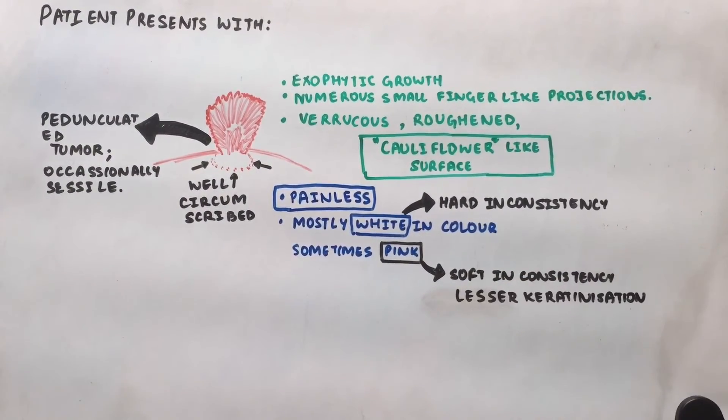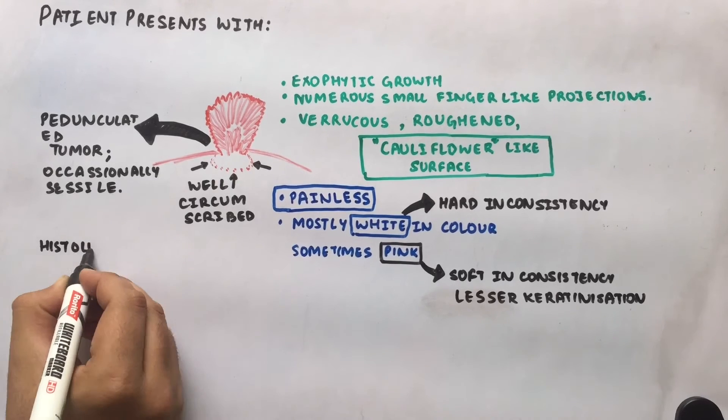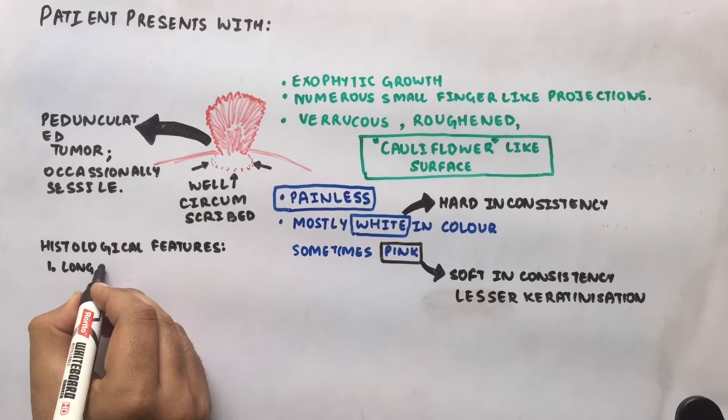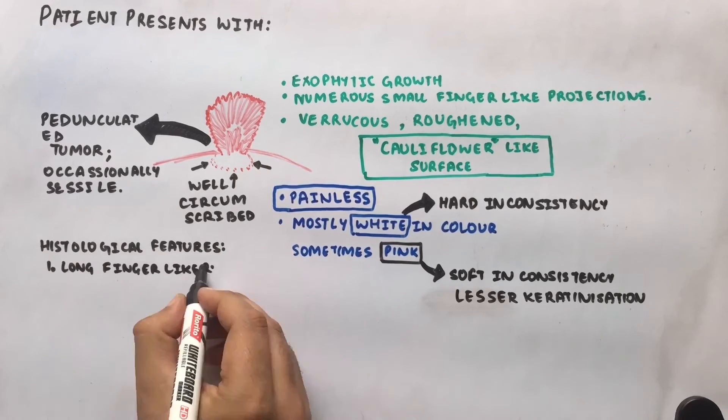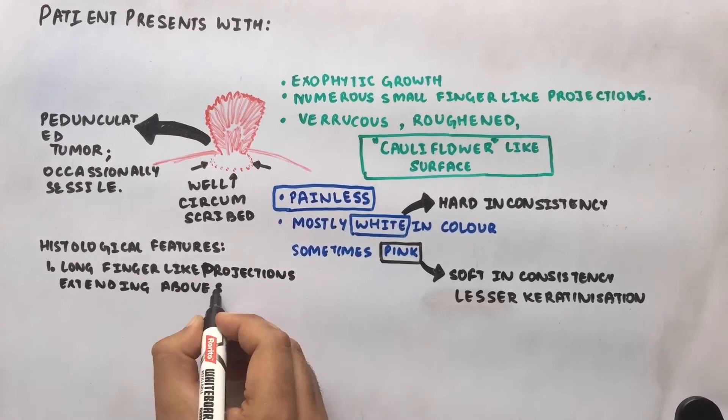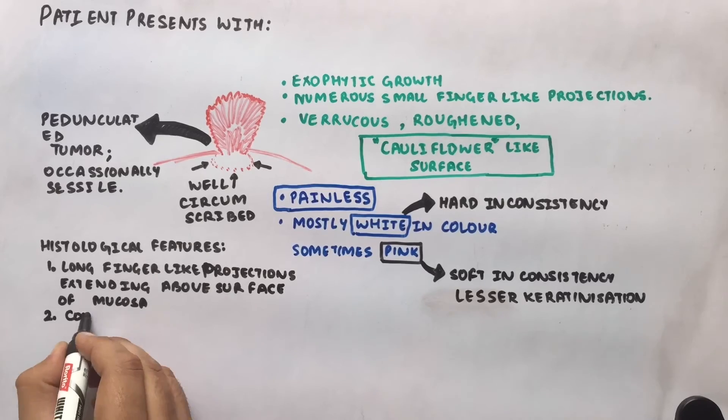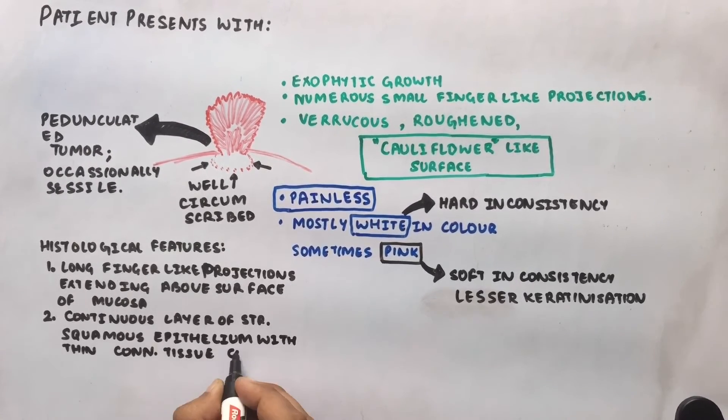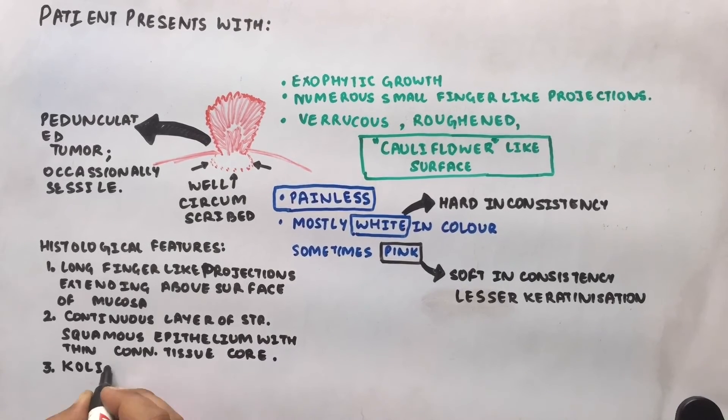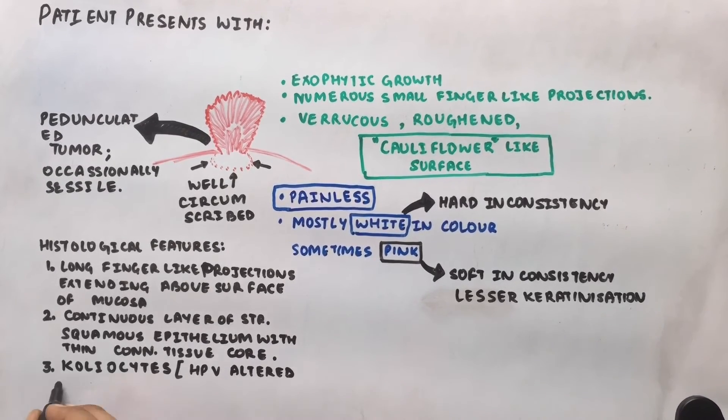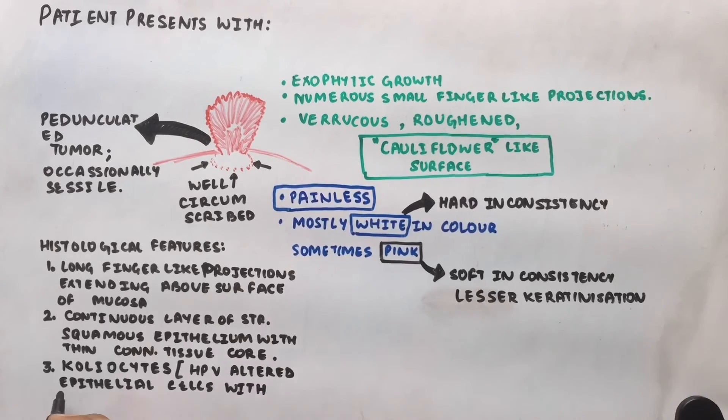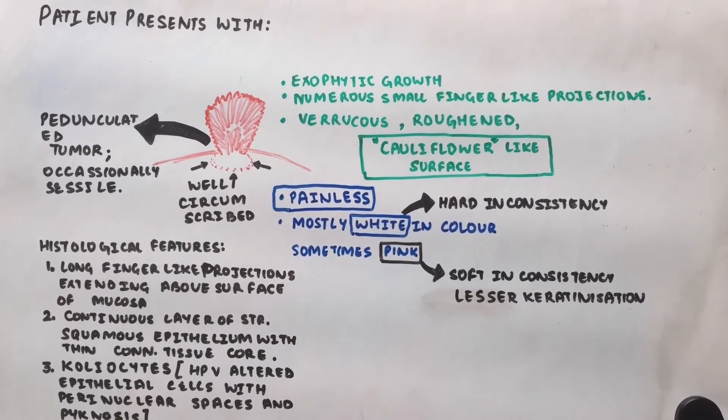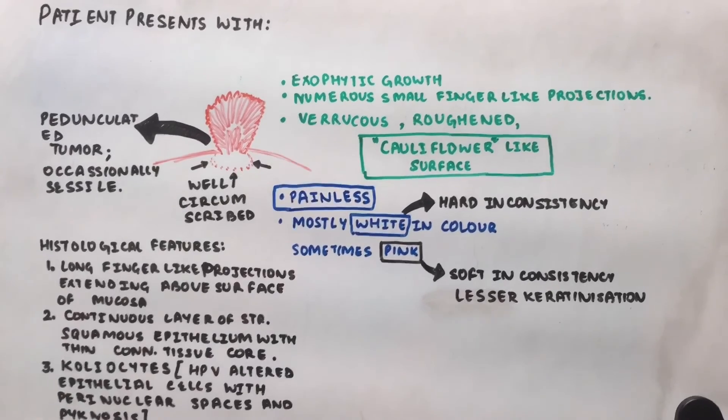Histologically, many long, thin, finger-like projections may be seen extending above the surface of the mucosa, which is made up of continuous layer of stratified squamous epithelium and contains a thin connective tissue core. There may be presence of koilocytes, which are human papilloma virus altered epithelial cells with perinuclear spaces and nuclear pyknosis.